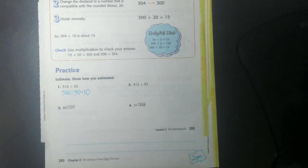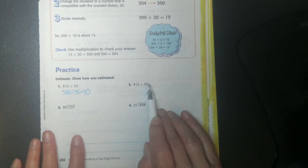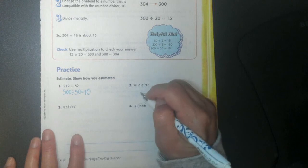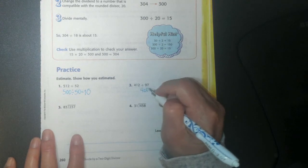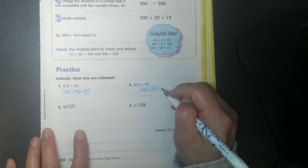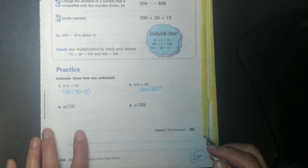We are just estimating today. So 412 divided by 97. I'm going to do it as easy as I can. I'm going to say 400 divided by 100. That makes it pretty easy, right?